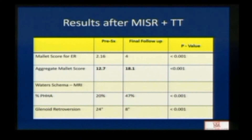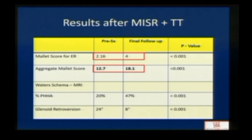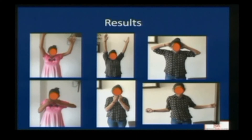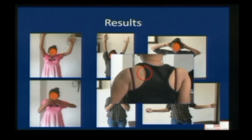Mallet score improved from 2.16 preoperatively to 4 at final follow-up. Aggregate Mallet score improved to 18, and all MRI parameters also improved substantially. This is an adolescent patient with marked trumpeting and internal rotation contracture treated with MISR and tendon transfer. Her abduction improved and trumpeting resolved, and she has a very minimal aesthetic scar.